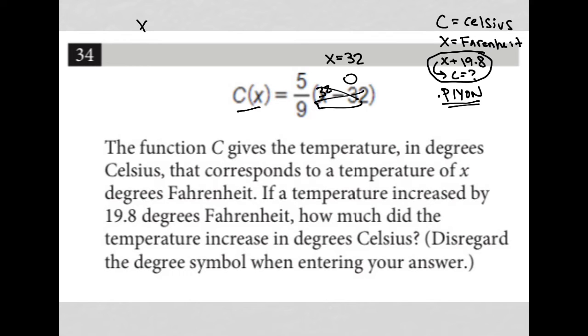So in essence, when X equals 32, when Fahrenheit is 32 degrees, Celsius is equal to zero.